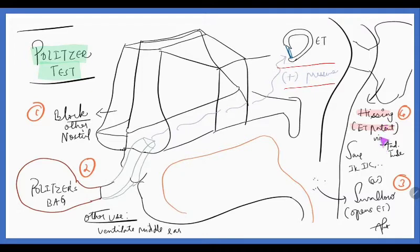If at all there is a patent Eustachian tube, it reaches the middle ear cavity and bulges the tympanic membrane. This can be heard as a hissing sound. By this pressure wave, it hits the tympanic membrane, gives a hissing sound. This hissing sound can be heard with the auscultation tube. This says that there is a patent Eustachian tube. This can also be used for ventilating the middle ear.